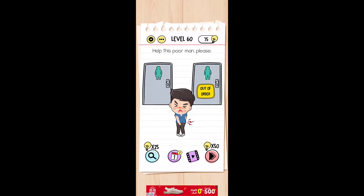Help this poor man please. As you can see, out of order. The man's toilet is out of order. He cannot go, so what you need to do? Just remove the skirt and it will become a man's toilet.